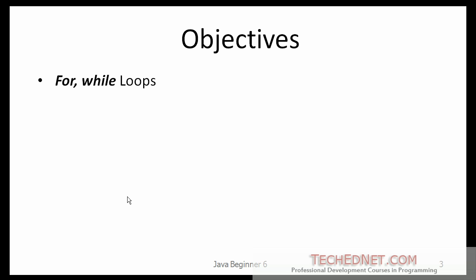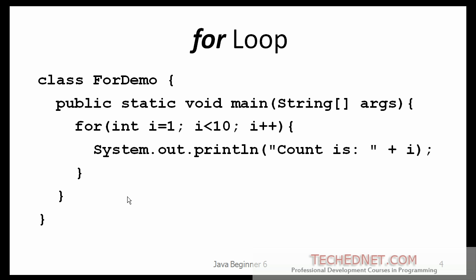So the objectives of this lesson are going to be mostly the for loop and the while loops. The for statement provides a compact way to iterate over a range of values. It is often referred to as the for loop because of the way in which it repeatedly loops until a particular condition is satisfied.